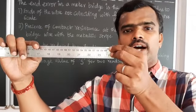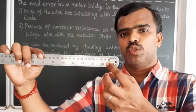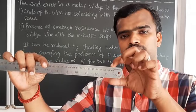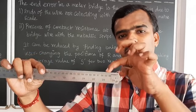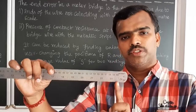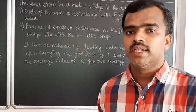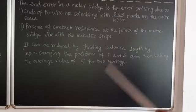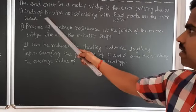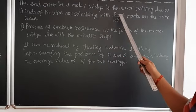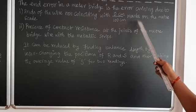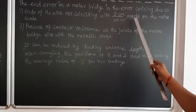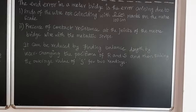In a meter bridge, the scale goes from 0 centimeter to 100 centimeter. The end error arises due to two points: first, the ends of the wire not coinciding with the 0 centimeter or 100 centimeter marks on the meter scale. The wires are not coinciding exactly at those marks.